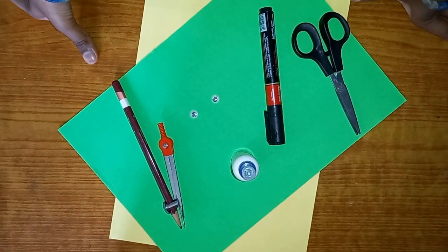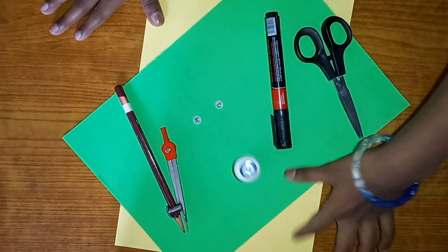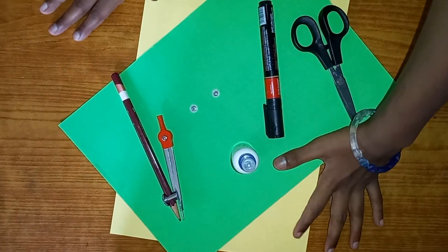Hi guys, welcome back to Fun Time. Today I'll be teaching you how to make a paper turtle. Let's start. So you'll be needing two colored papers for this. I'll be using yellow and green.